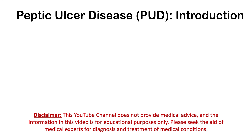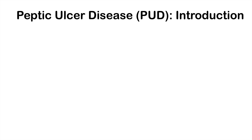This lesson is on the signs and symptoms of peptic ulcer disease. We're going to talk about the common, less common, and more rare signs and symptoms that occur in peptic ulcer disease, and we're going to talk about why they occur. If you want more information on peptic ulcer disease in general, please check my lesson on that topic.